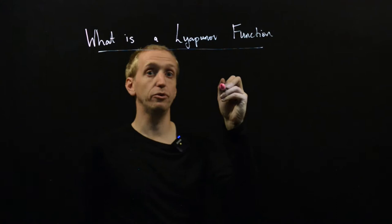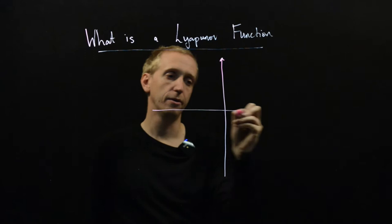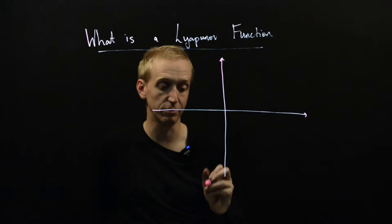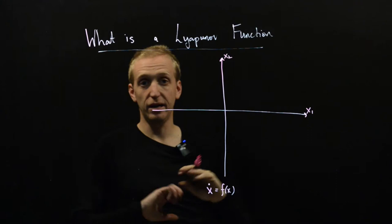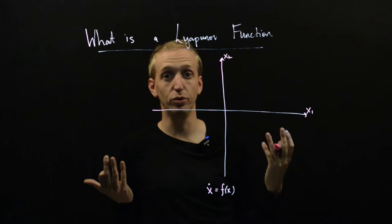So before we get on to a Lyapunov function, we are just going to draw out the phase portrait for a particular two-dimensional nonlinear system. So we have some system, x dot is equal to f of x, x is two-dimensional, so we have an x1 and an x2, and we just draw the phase portrait in the normal way. And we're just going to use this picture to help build our intuition for what the Lyapunov function is.